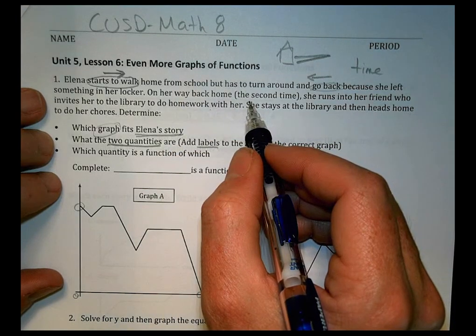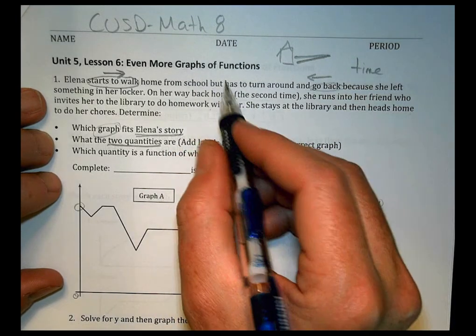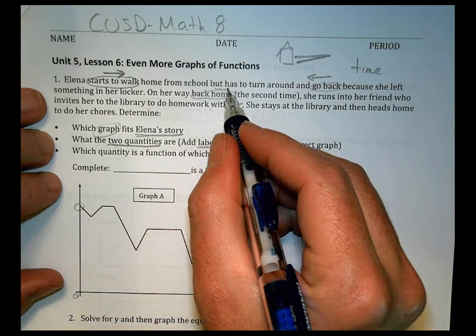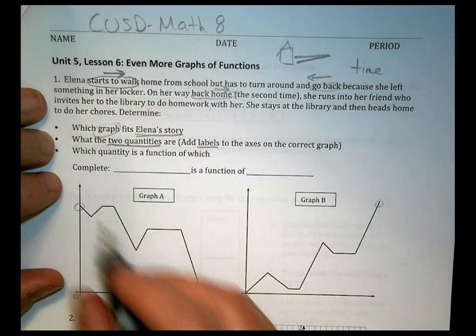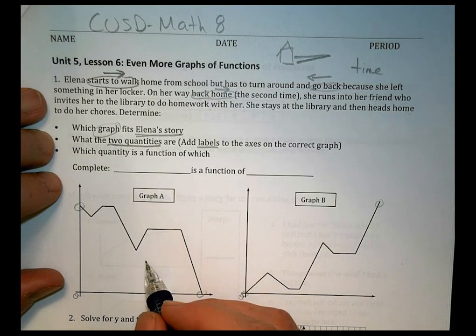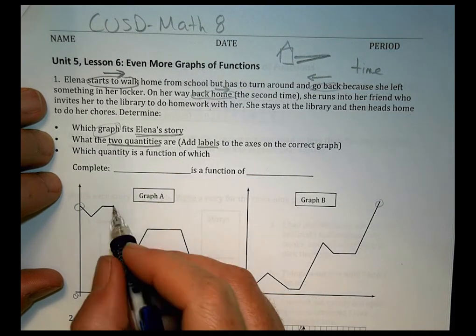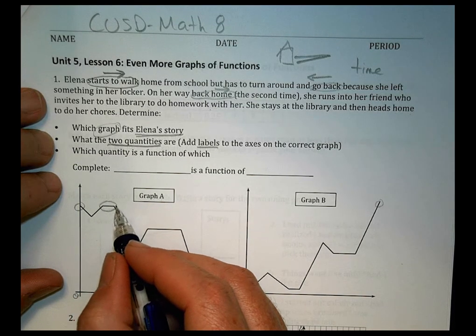They're going one way, then they go back the other way. It's going one way, then going back the other way. They both do that, in a sense. On our way back home the second time, so she's continuing this journey on the back side. So it's more the same direction. So if we went this way, we're going to continue to go this way again.